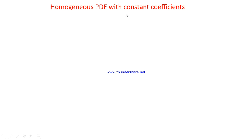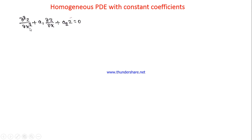Today we will discuss homogeneous PDE with constant coefficients. The standard form of the equation is: ∂²z/∂x² + a₁ ∂z/∂x + a₂z = 0. Here z is the dependent variable and it is present in every term, which makes it a homogeneous equation. Each derivative is with respect to the single independent variable x. Even for a third-order term, it should be ∂³z/∂x³. An equation of this kind is a homogeneous PDE with constant coefficients, solvable by the method we are going to learn now.